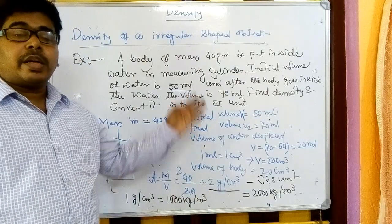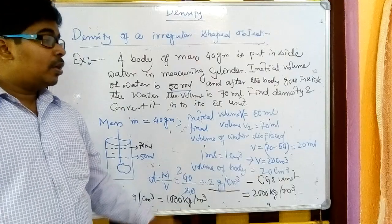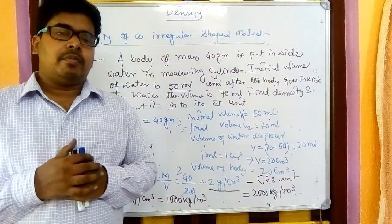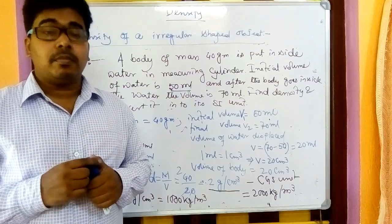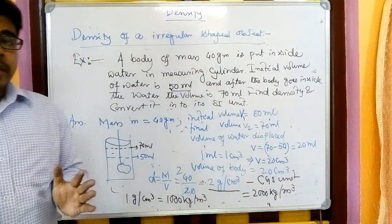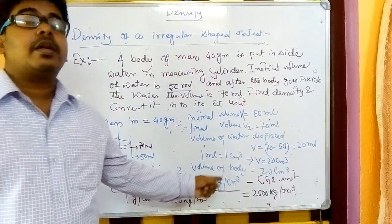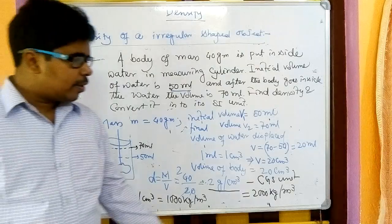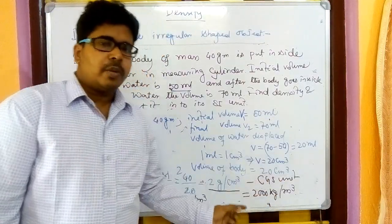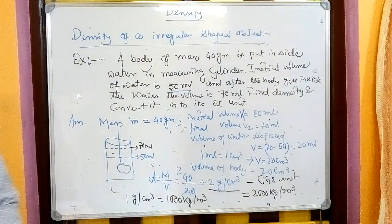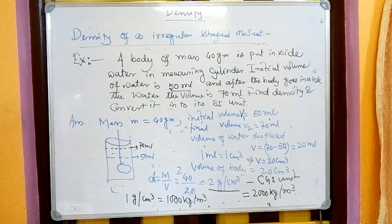These volume equations come from mathematics. One important thing: if the volume is in cm³ but mass is given in kg, you must convert kg to grams first. If you don't make the conversion your answer will be wrong. Either work in CGS — grams and cm³ — or convert everything to SI — kg and m³. If the unit systems are mixed, your answer will be wrong.